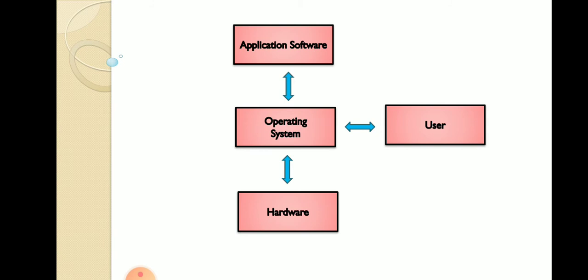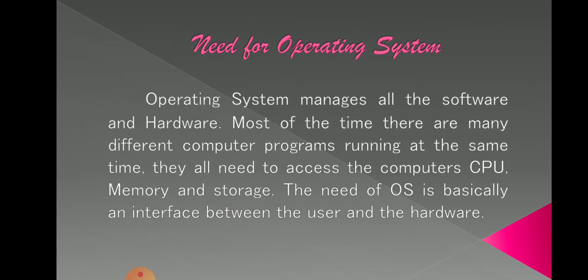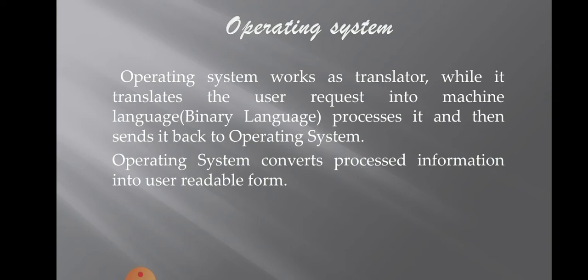Without an operating system, the computer is useless. The need for an operating system is that it manages all the software and hardware in the system. Most of the time there are many different computer programs running at the same time; they all need to access the CPU, memory, and storage. The OS coordinates all these to make sure each program gets what it needs.